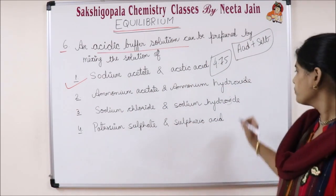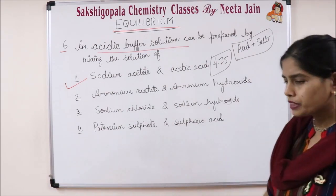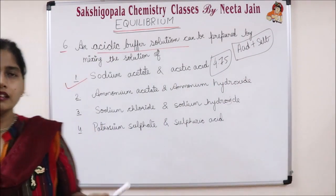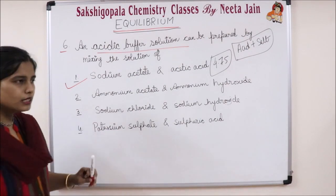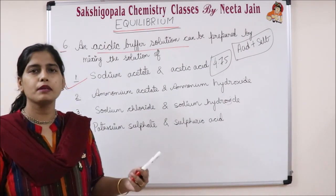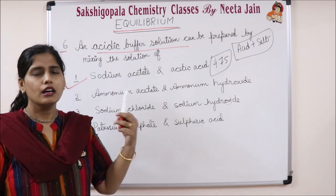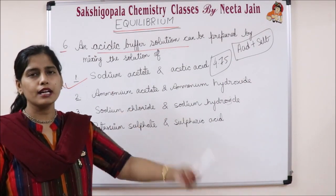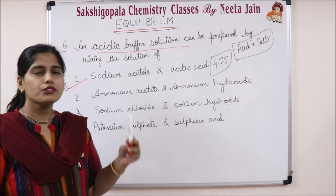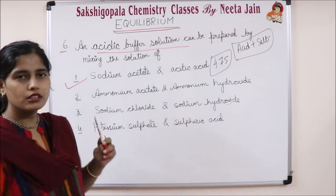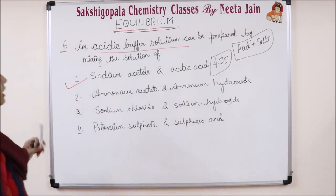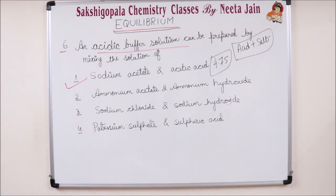Now, what is a basic buffer? A basic buffer is again a combination of salt plus base. The base is ammonium hydroxide, that is NH4OH, and the salt is NH4Cl. The pH of this basic buffer is around 9.25. That is an example of a basic buffer.